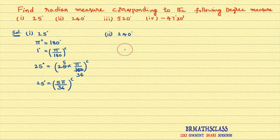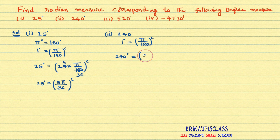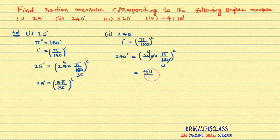Similarly, we will see the second bit: 240 degrees. We need to convert 240 degrees into radian measure. The important thing is you need to know what 1 degree is: 1 degree is π/180 radians. You need 240 degrees, so you multiply both sides by 240. 240 × π/180 — the zeros cancel, and simplifying: 240/180 reduces to 4/3. So 240 degrees equals 4π/3 radians.